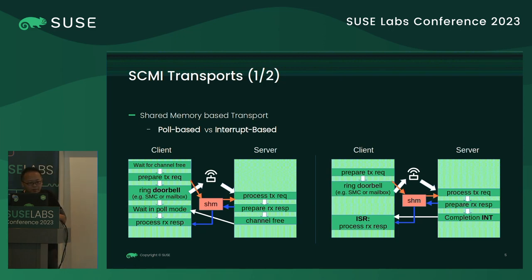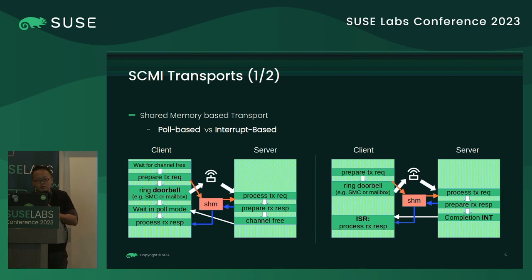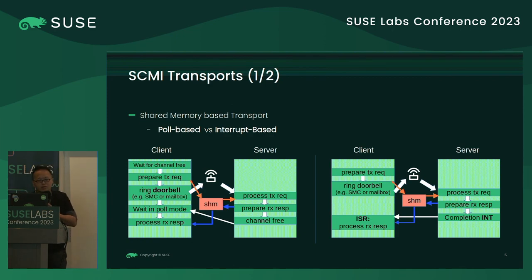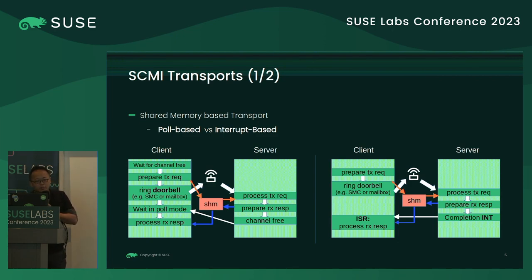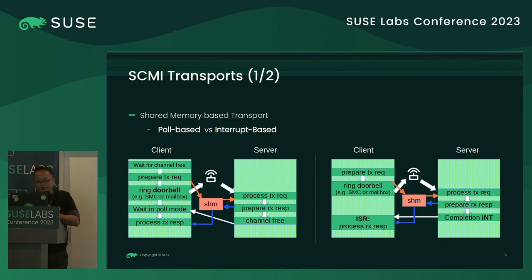The interrupt-based mode means the client doesn't have to wait. They send a message through shared memory and go back to do other things. Once the SCMI server successfully processes those requests and generates a response, it notifies the SCMI client via completion interrupts, so a registered interrupt service routine is called and deals with the response accordingly.